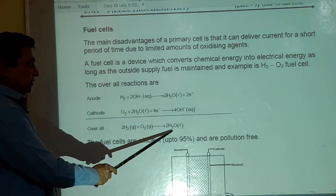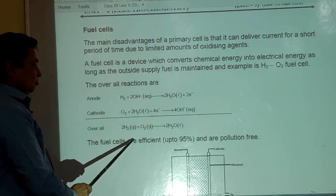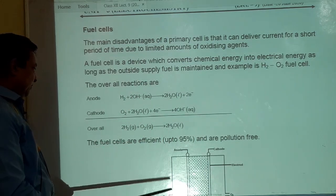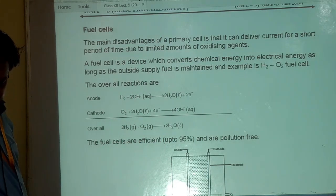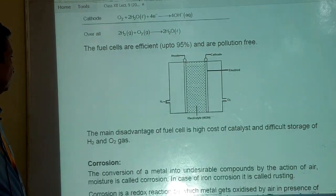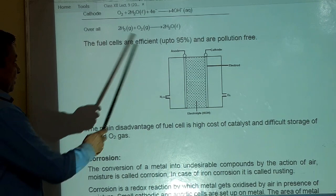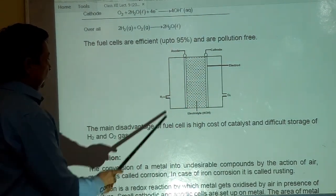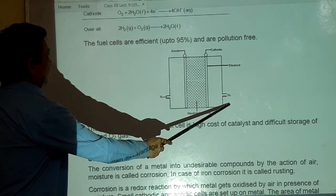तो net reaction क्या आएगी? Net cell reaction 2H2 plus O2 gives 2H2O. और भी होते हैं fuel cells. This is hydrogen oxygen fuel cell: 2H2 plus O2 gives 2H2O liquid. यह fuel cell है और यह इसका एक diagram बना रखा है. Anode, cathode. H2 anode हो गया और O2 cathode हो गया. तो इस पे oxidation हो जाएगा और इस पे reduction.